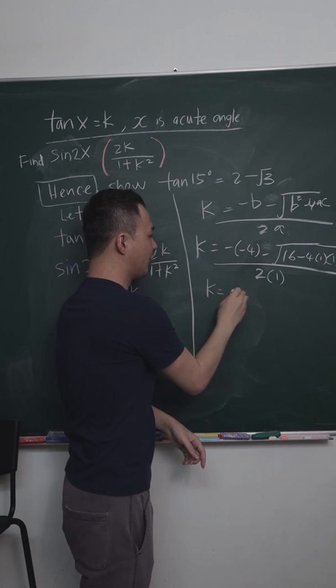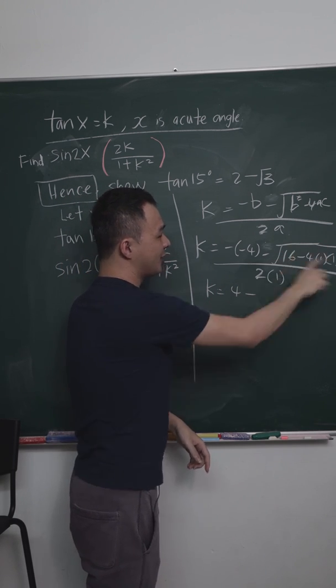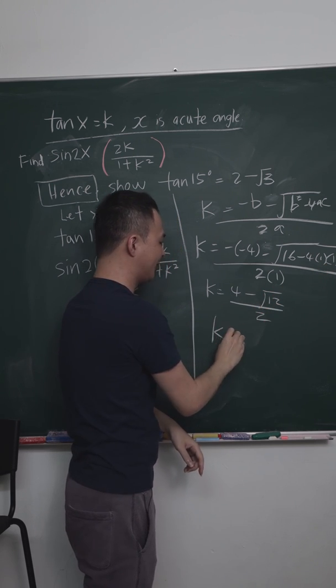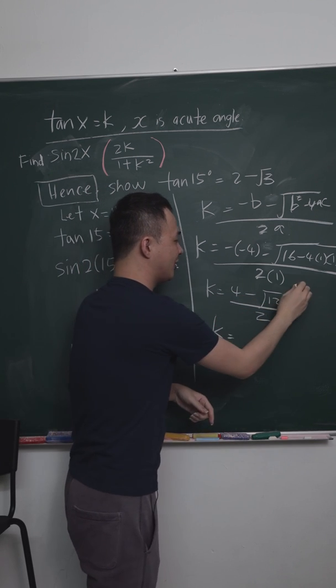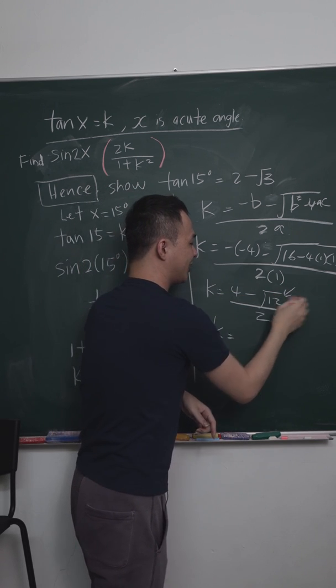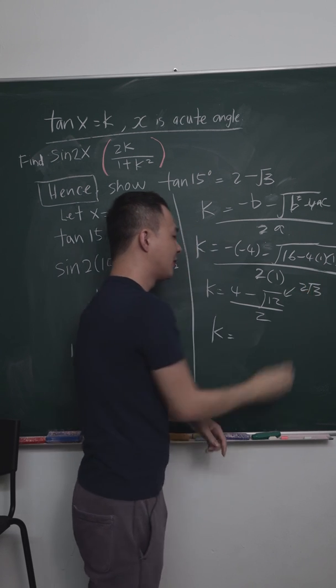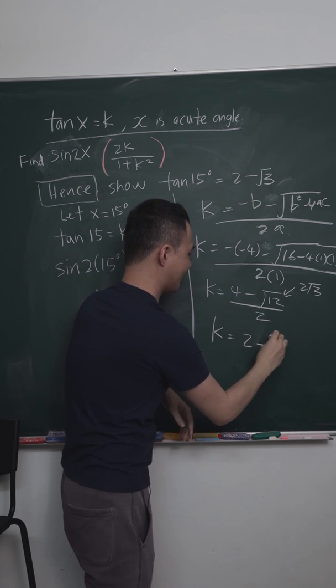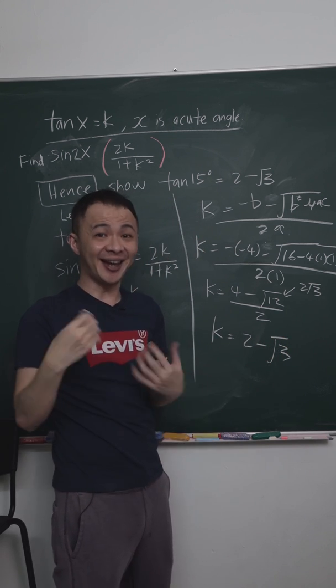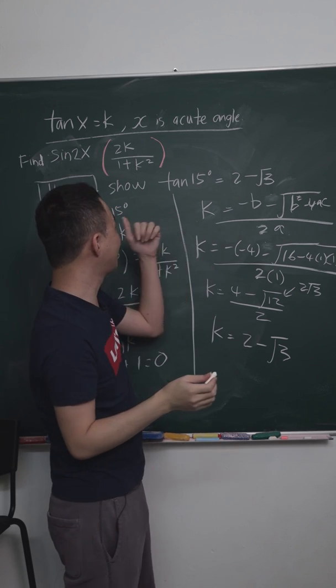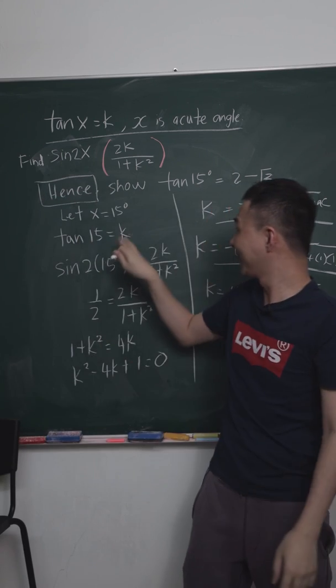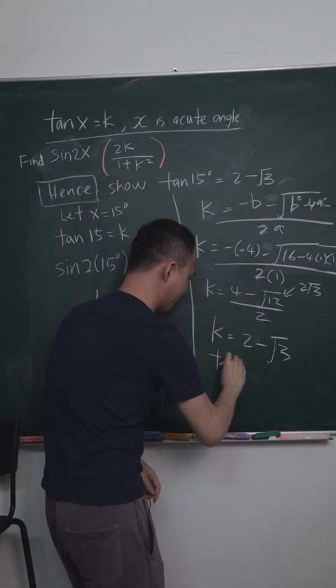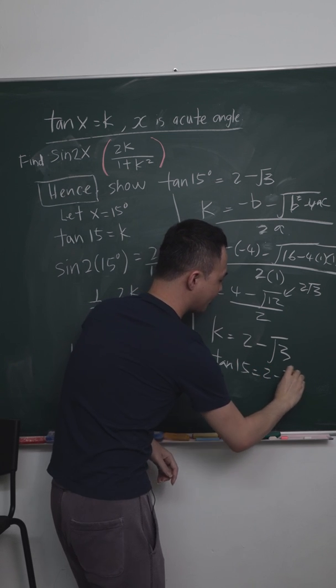Then my k should equal to 4 minus, this one will be square root of 12 divided by 2. If I simplify this one, this one is exactly, take out the 2, right? Then this one, square root of 12 is basically 2, 3, 3. So if I factorize out the 2 here and I simplify, I should get 2 minus square root of 3. And what is k? k is basically tangent 15, isn't it? So you can see my k is tangent 15. Therefore, tangent 15 equals 2 minus square root of 3.